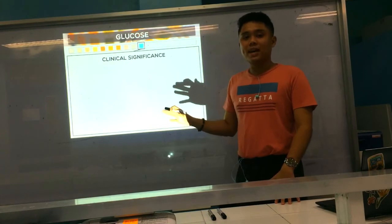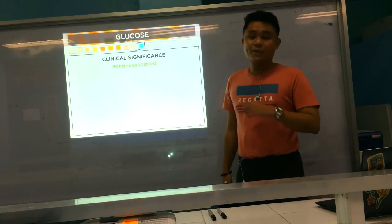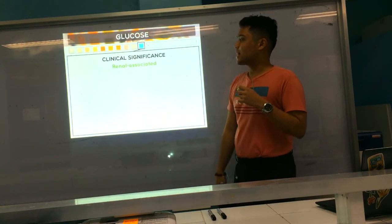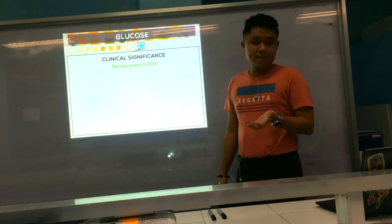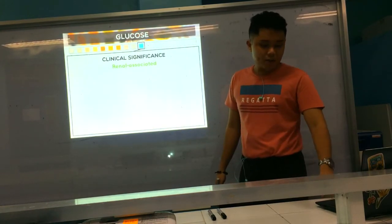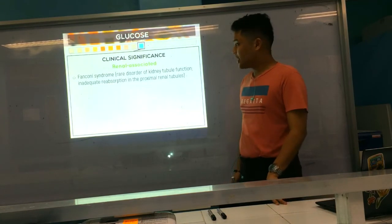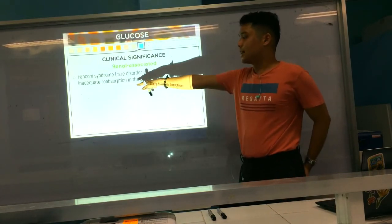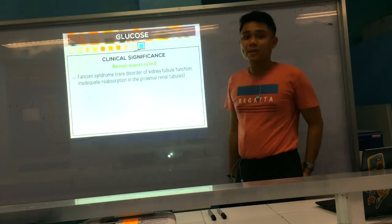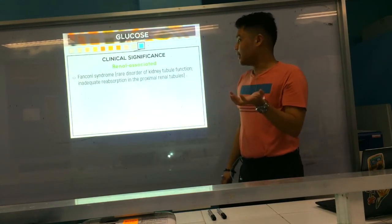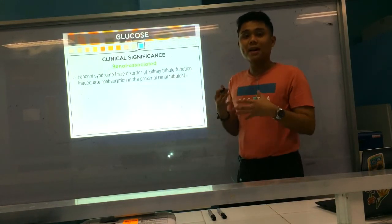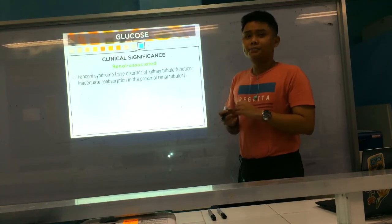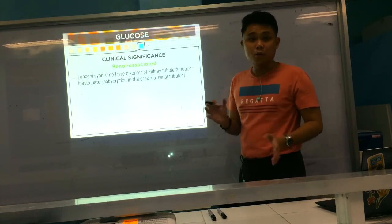Now we go to renal-associated glycosuria. For renal-associated, there is a problem with the kidneys themselves. A very good example is Fanconi syndrome, where there are problems with the kidney tubules causing inadequate reabsorption in the proximal renal tubules, so glucose can no longer be reabsorbed and is released in the urine.